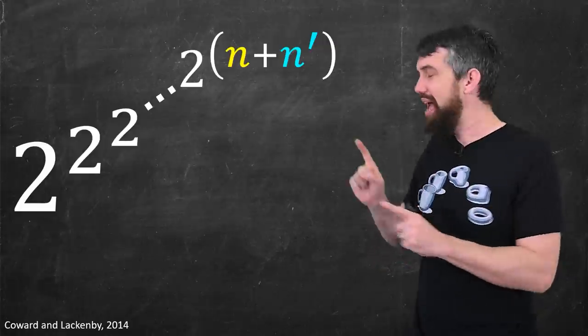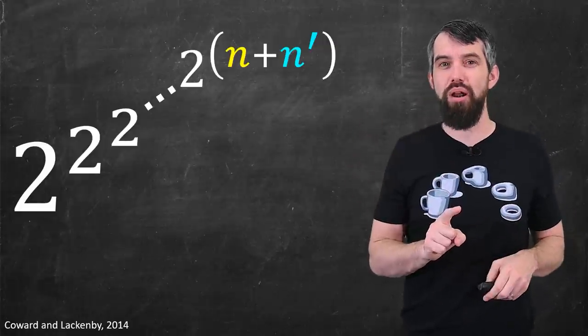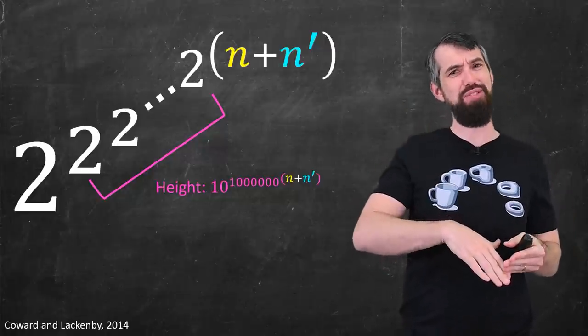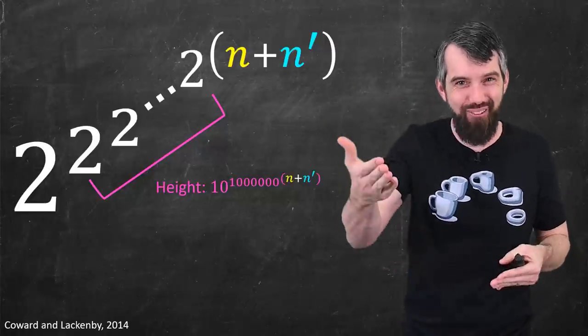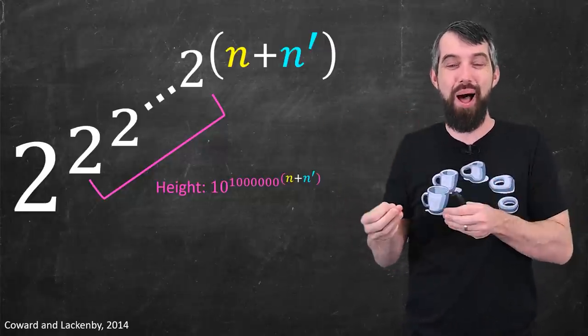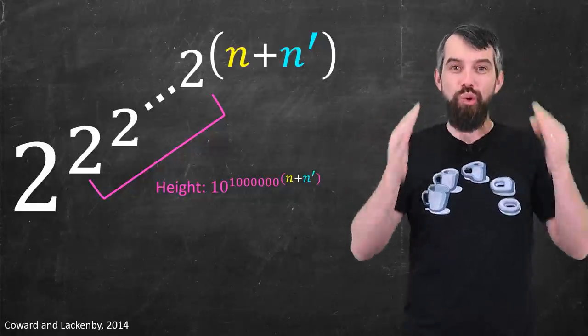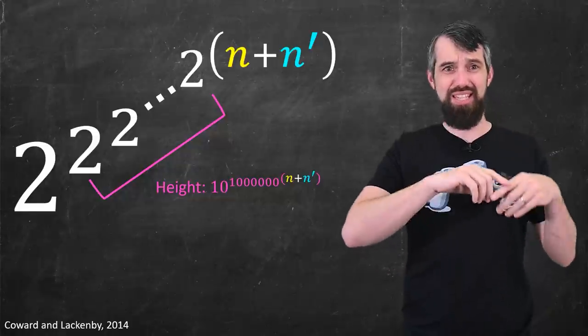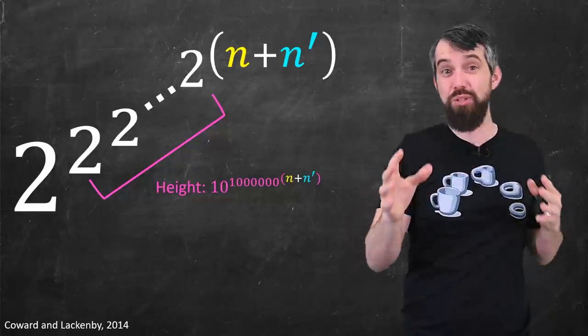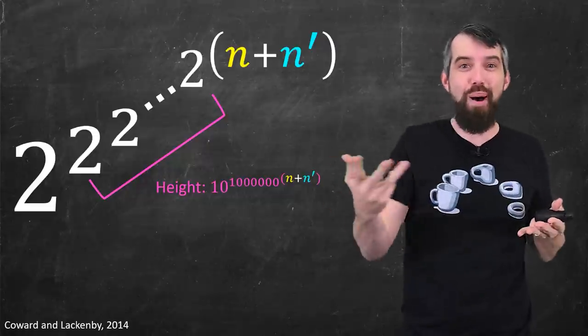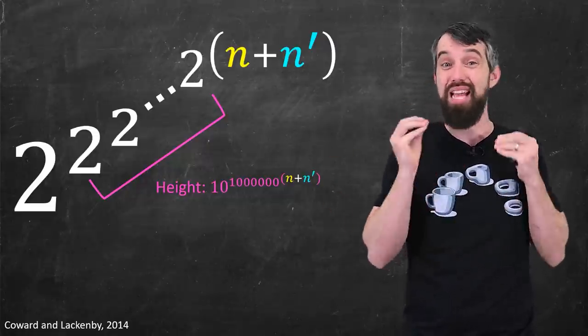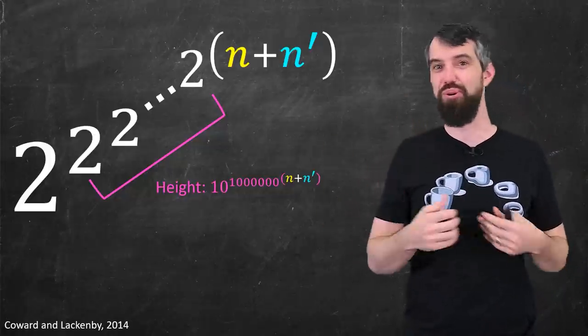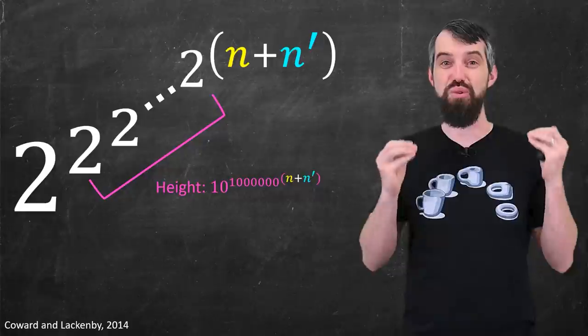Here's the special part. How many twos in this power tower? Well, it's got a height of ten to the million to the power of n plus n prime. This is an outrageously enormous upper bound. This upper bound gives us just the length of the possible sequences, and you have to check all the possible sequences of lengths less than this upper bound. It's enormous. It's completely impractical to do in any number of universes that you could imagine.